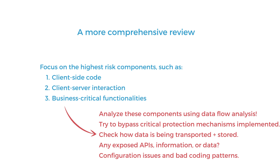Review code that performs critical functionalities in the application, including code that deals with authorization, authentication, sensitive data, and other logic critical to your business. Look at the protection mechanisms implemented and see if you can bypass them. Also check how these functionalities deal with sensitive information — how business and user data is being transported and stored. Are they being transported and stored in a safe way? This is also a good time to look for exposed APIs: examine publicly available endpoints and determine whether access to some of them should be restricted.